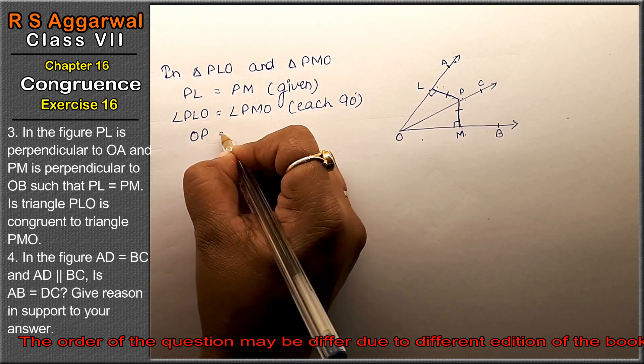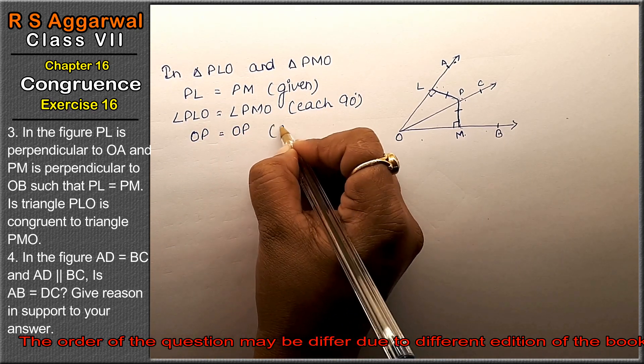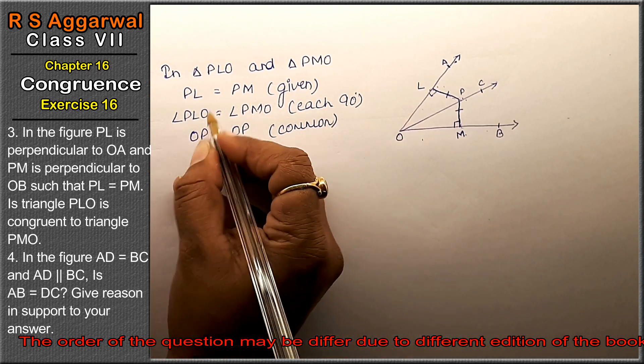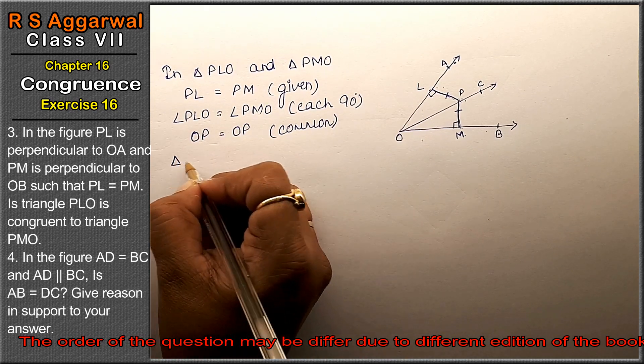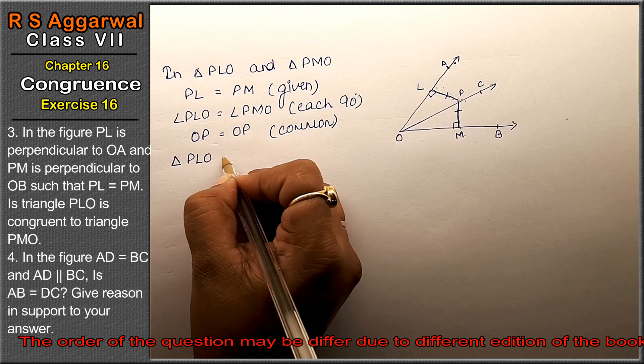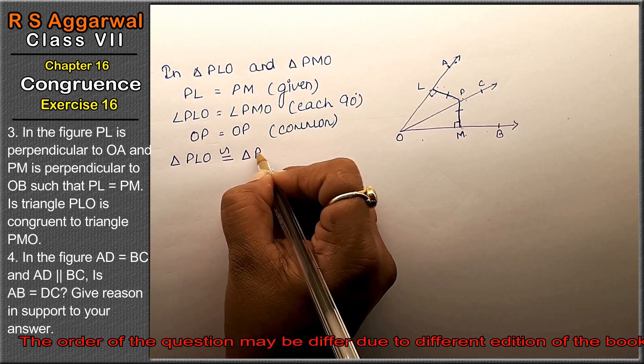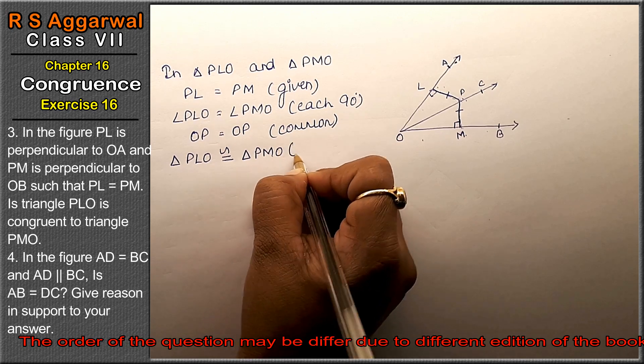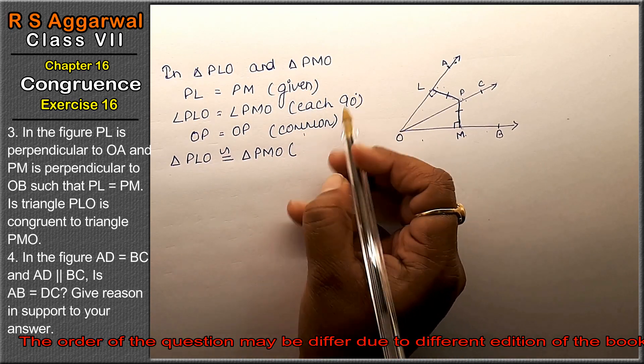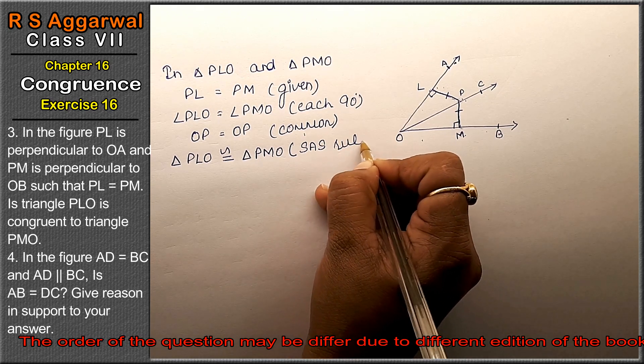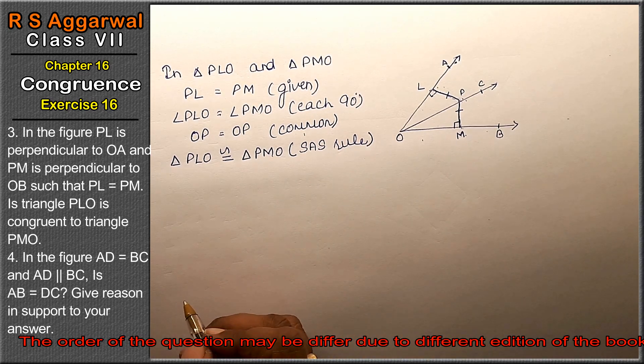And OP is common in both triangles. So three things are proved: triangle PLO is congruent to triangle PMO because two sides and one angle are equal, so SAS rule is applicable. Therefore they are congruent.